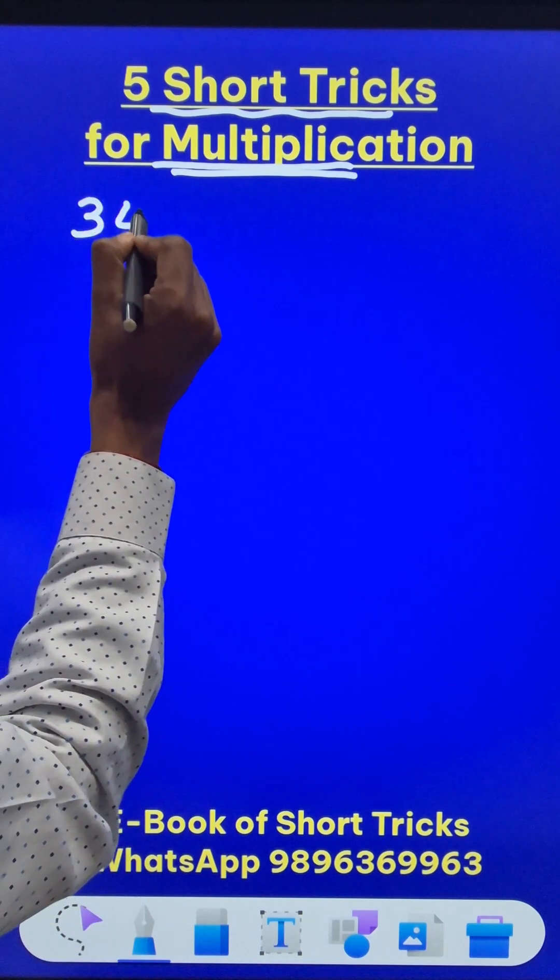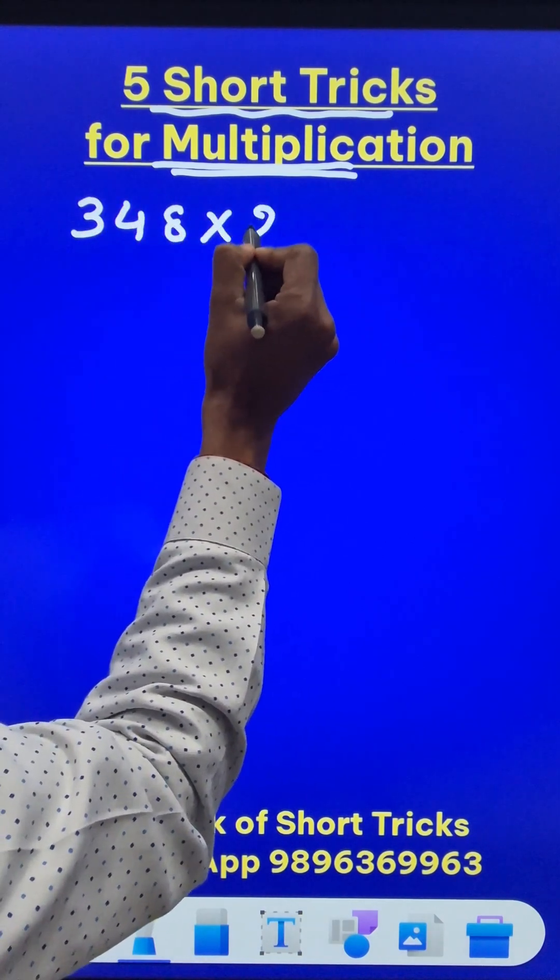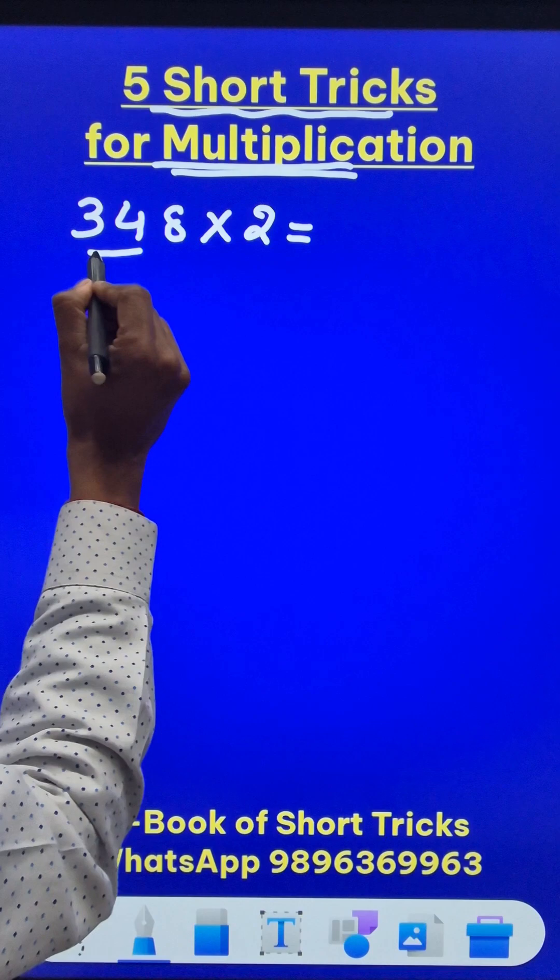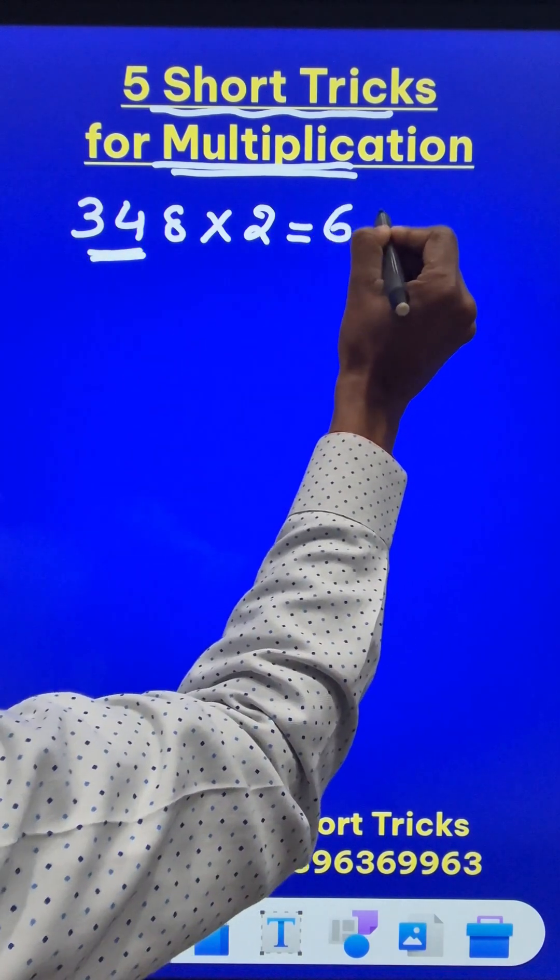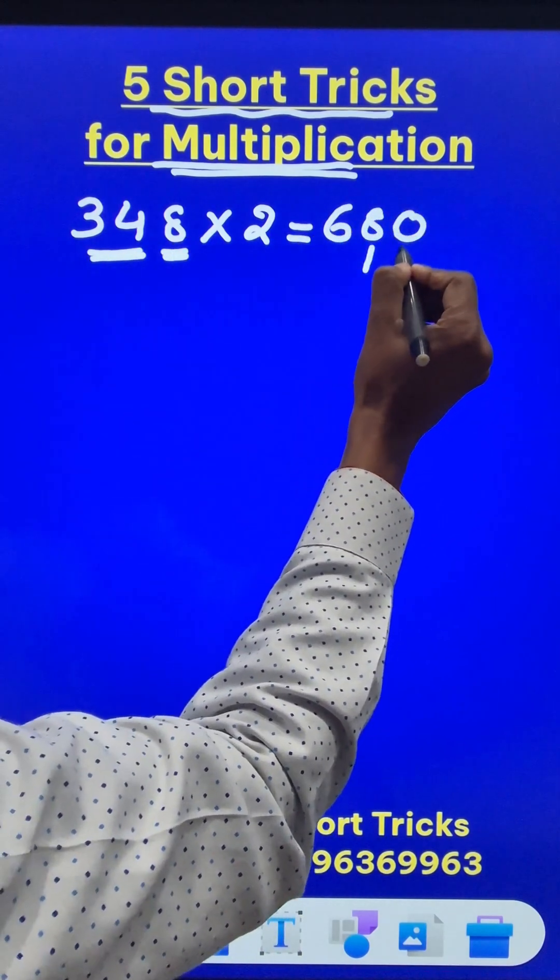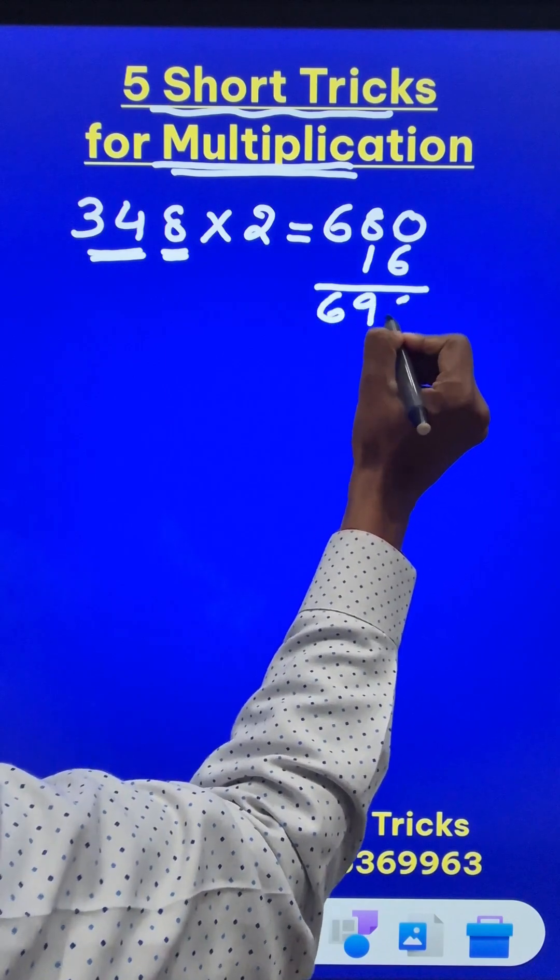Suppose you have a number like 348 and you want to multiply that by 2. Just double 34, you get 68. Then put a 0 there and double 8, you get 16. Add the 2 results, you get 696 as the answer.